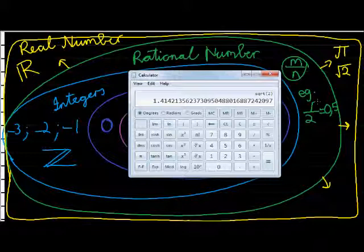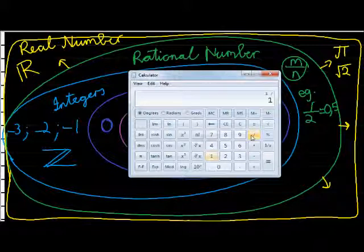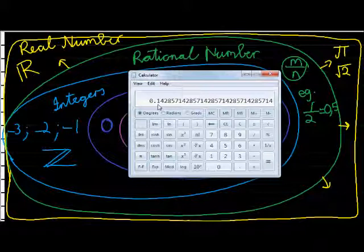If I take 1 divided by 3 — that's an integer divided by an integer — I get 0.333, which goes on to infinity, but it repeats itself. Now if I take 1 divided by 7, that's also an integer divided by an integer, and the answer also goes on forever. But look at the pattern: 142857, 142857, 142857. It repeats itself, and therefore it is not irrational — it makes rational sense. There's a way of going from here back into a fraction, which you might learn later.